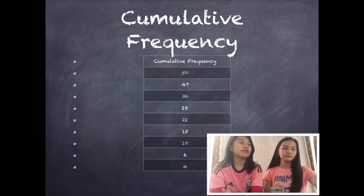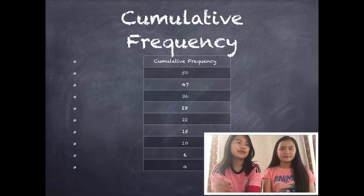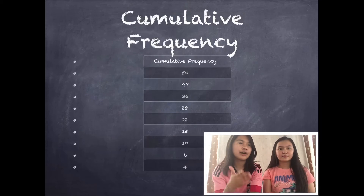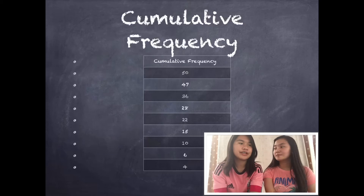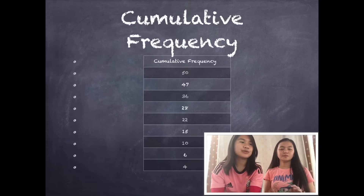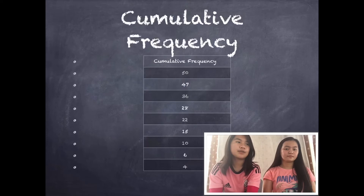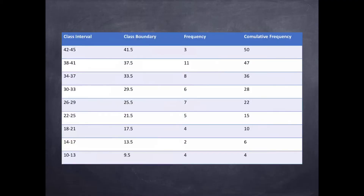For the cumulative frequency, the formula is to copy the lowest row frequency, then add to the upper frequency. So: 4, then 4+2=6, 6+4=10, 10+5=15, 15+7=22, 22+6=28, 28+8=36, 36+11=47, and 47+3=50. Here we can see the complete table: class interval, class boundary, frequency, and cumulative frequency.